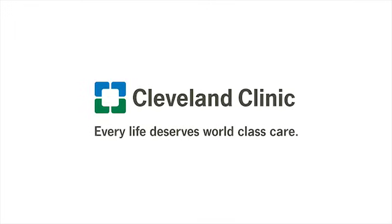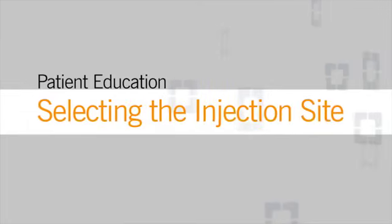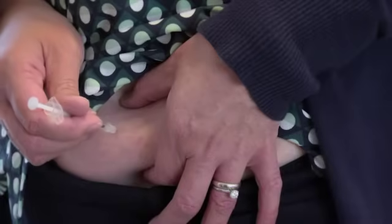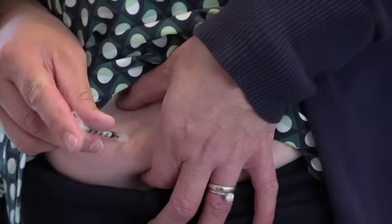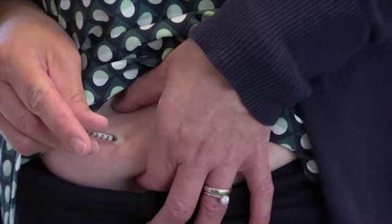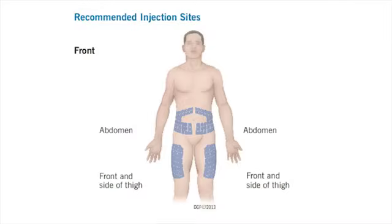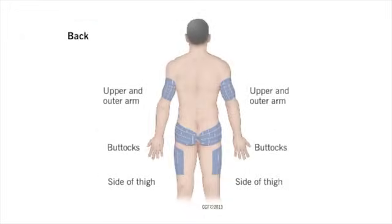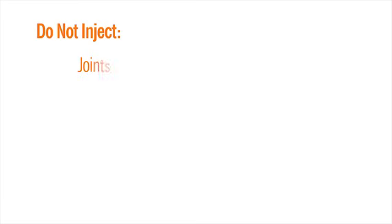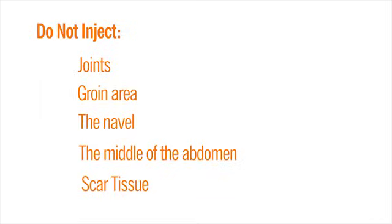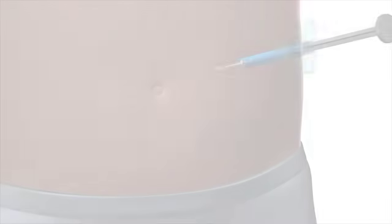Since you will be injecting insulin on a regular basis, you need to know where on your body to inject it, and you will need to learn how to rotate or switch your injection sites. Recommended injection sites include the abdomen, front and side of the thighs, upper and outer arms, and buttocks. Do not inject near joints, the groin area, the navel, the middle of the abdomen, or scar tissue.